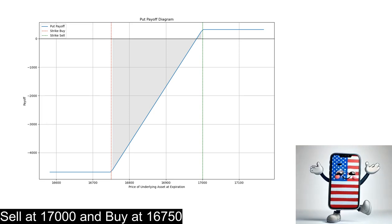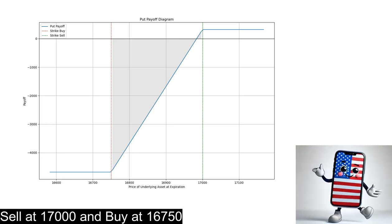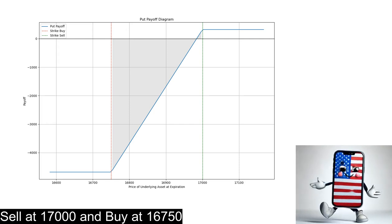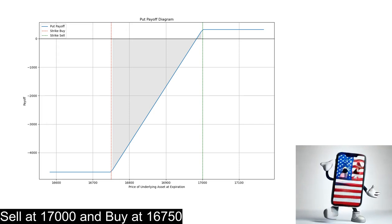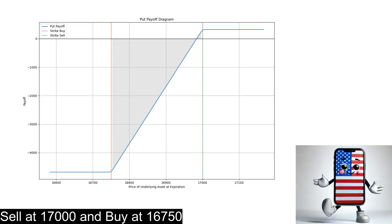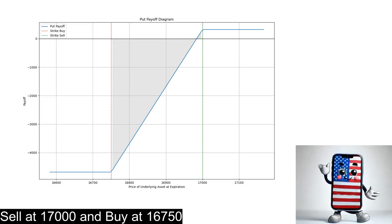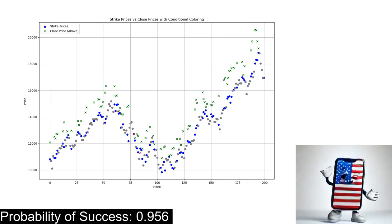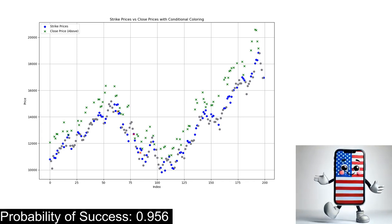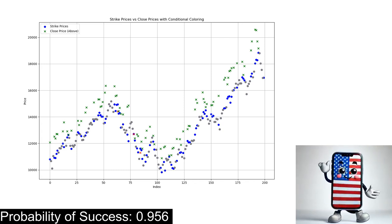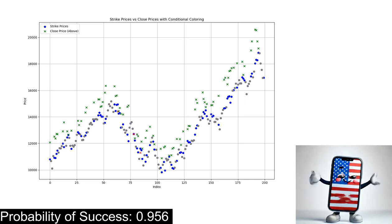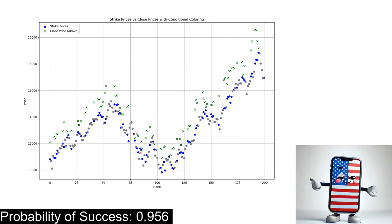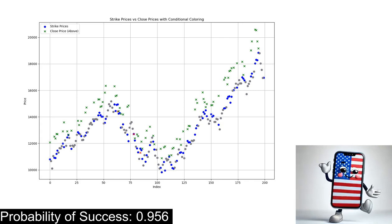We identified a put credit spread with the highest expected value by selling at $17,000 and buying at $16,750 to earn a premium. This setup has a delta of negative 0.1, expires in 18 days, and offers a reward of $317 against a risk of $4,683. The system indicates a success probability of about 95.6%. This results in an expected value of $94 over an 18-day period, which surpasses our required expected value of $71. You can use this probability for evaluating your trade calculations as needed.